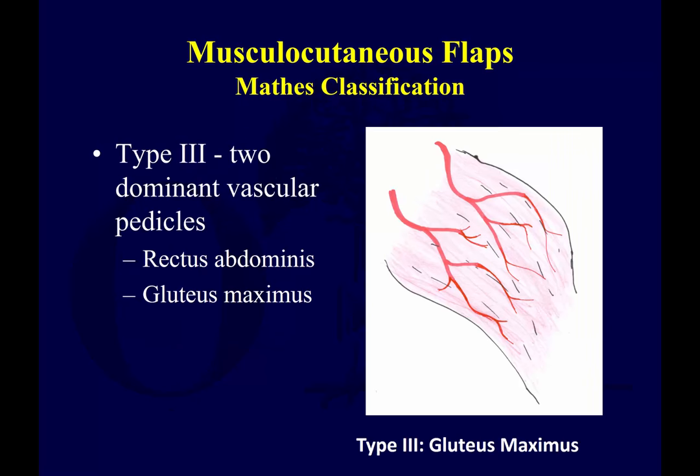Type 3 has two dominant vessels that allow for rotation from either end. A rectus flap is supplied by the deep inferior epigastric — the dominant vessel that will reliably supply the entire muscle — and the superior epigastric artery will reliably support the upper two-thirds. Gluteus maximus is supplied by the superior and inferior gluteal arteries; the inferior gluteal artery is dominant, but an excellent intramuscular vascular connection allows the gluteus to be supplied by either vessel. These vessels are separated by the piriformis muscle as they exit the pelvis.